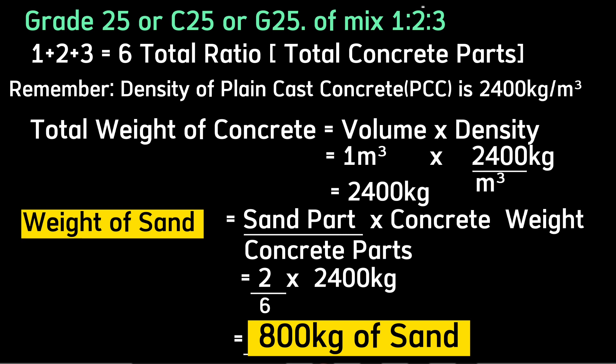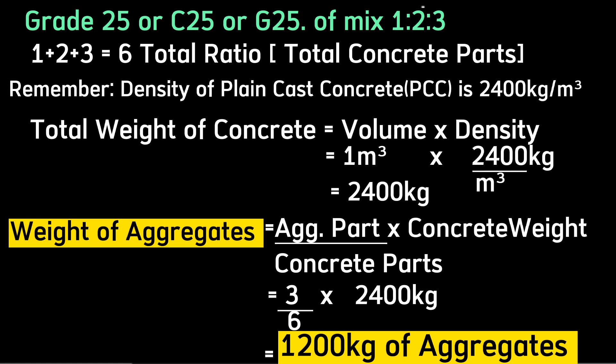The weight of sand equals part of sand divided by concrete parts, multiplied by concrete weight: 2/6 × 2400 = 800 kilograms of sand. Similarly, the weight of aggregates equals aggregate part divided by concrete parts multiplied by concrete weight: 3/6 × 2400 = 1200 kilograms of aggregates.